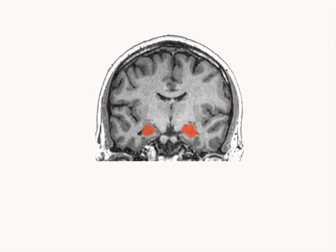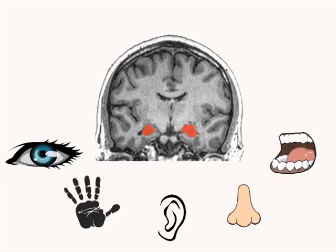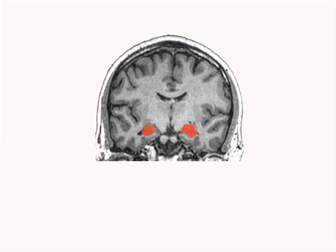Memories aren't just visual. You can remember how your cell phone feels in your hand, what your best friend's voice sounds like, the smell of fresh baked cookies, and the taste of your favorite soda. This is all possible because the hippocampus takes in information from all your senses and uses it to encode memories.